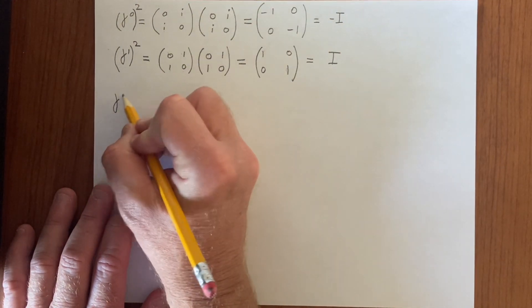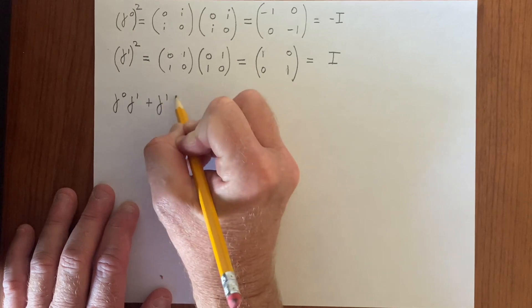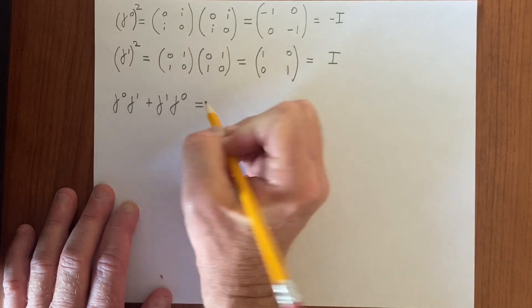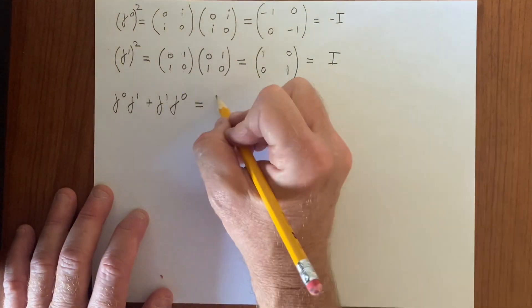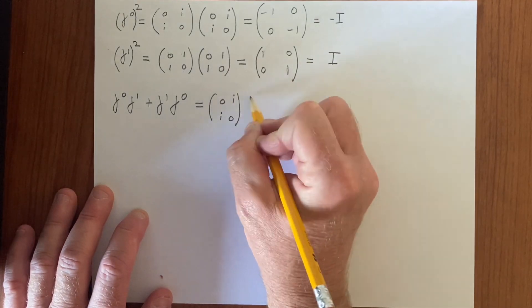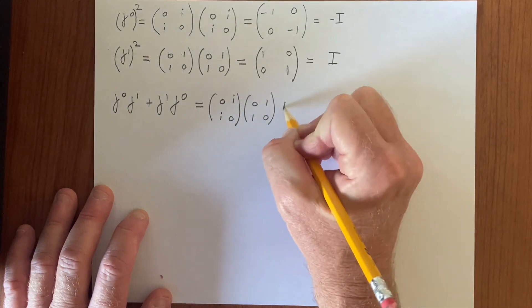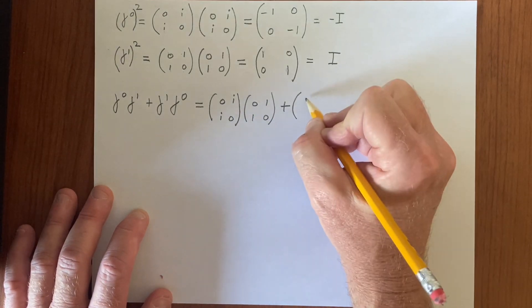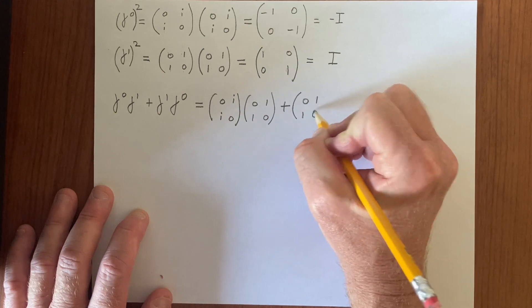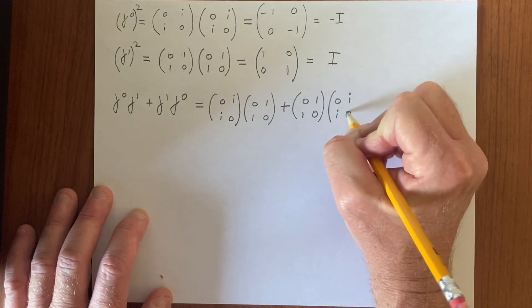Let's see what happens, gamma 0 gamma 1. This still won't work, gamma 1 gamma 0. This is equal to 0 i, i 0 times 0 1, 1 0 plus 0 1, 1 0, 0 i, i 0.